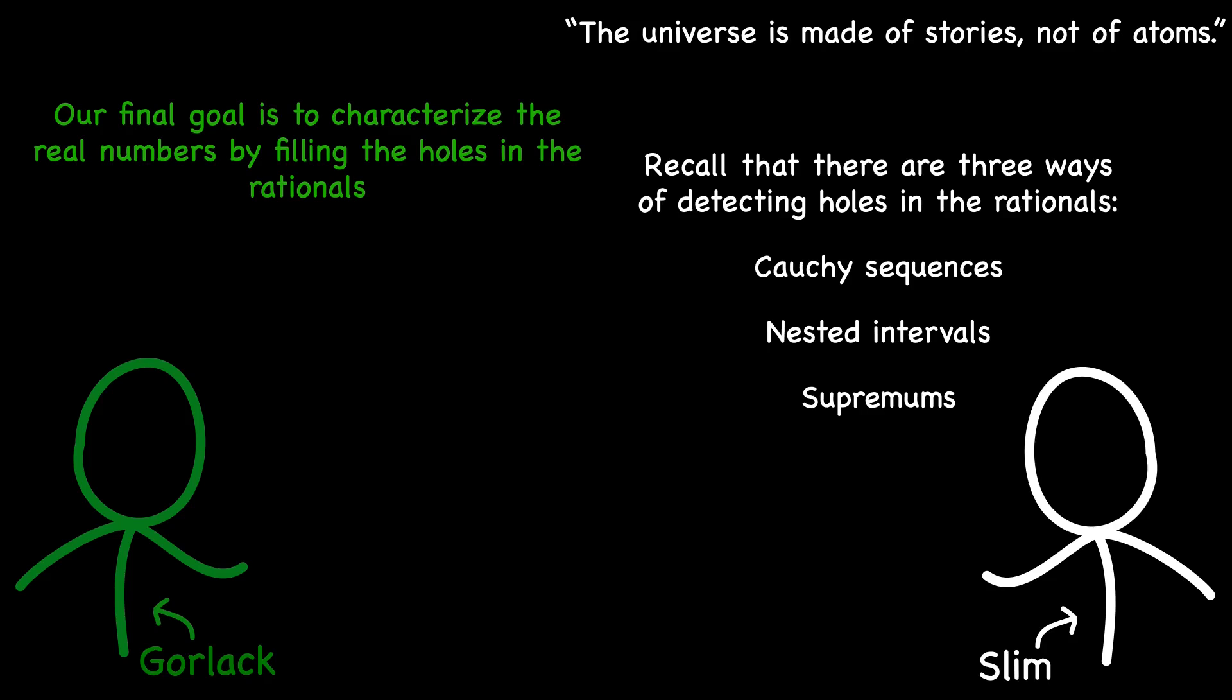In our journey, supremums emerge as the tool to identify and fill the voids in the rational line. However, delving into supremums requires establishing an order relationship. Thus, we proceed to introduce the axioms governing this type of relationship. A partial order is a binary relationship governed by three fundamental axioms.